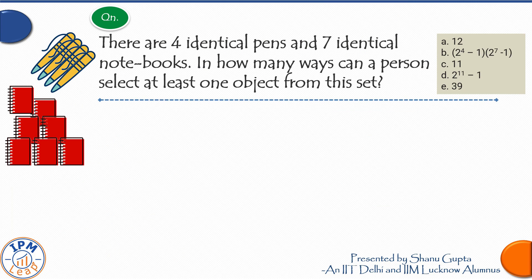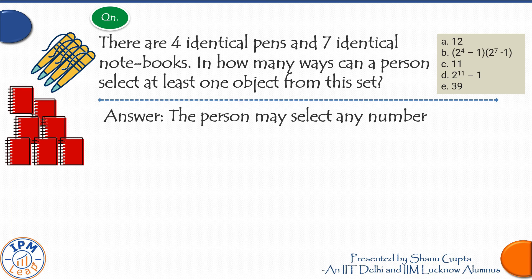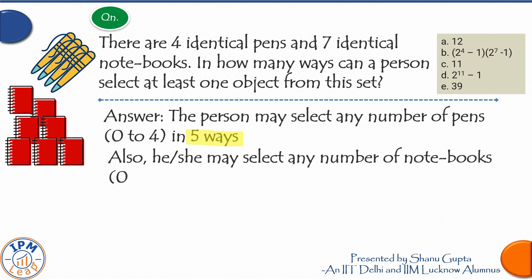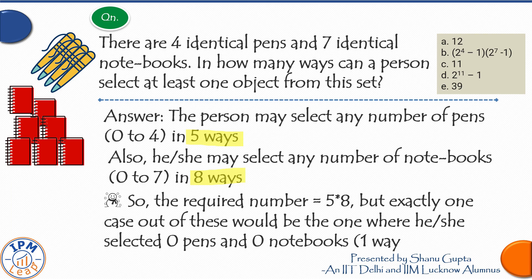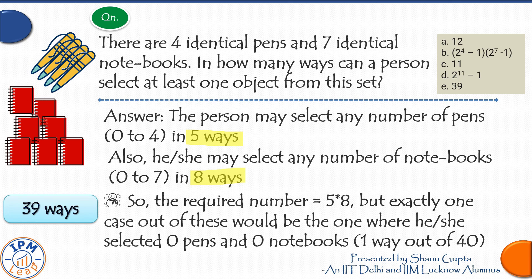Now let's practice a GMAT-level question. There are four identical pens and seven identical notebooks. In how many ways can a person select at least one object from the set? Pens can be selected in 5 ways (zero to four), and notebooks in 8 ways (zero to seven). Total combinations: 5 × 8 = 40. Subtracting the one case where zero pens and zero notebooks are selected: 40 − 1 = 39 ways.